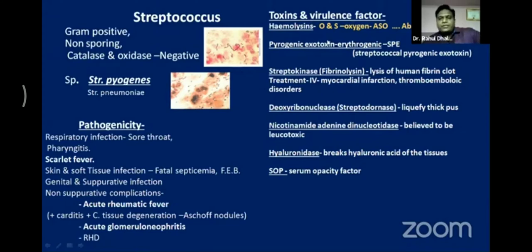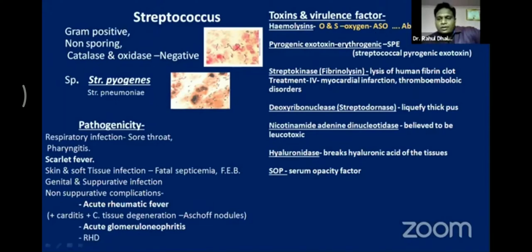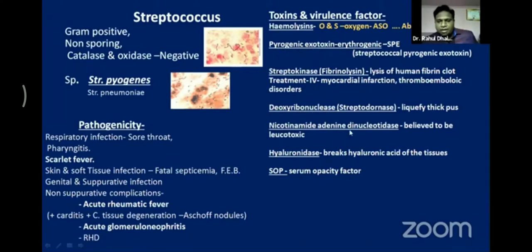Hemolysins produced by Streptococcus pyogenes are streptolysin O and streptolysin S — oxygen labile and oxygen stable respectively. Streptolysin O is very important: the immune system produces antibodies against it, detectable as anti-streptolysin O (ASO) antibody titer. The titer is 1:200; above this is significant infection. Other toxins include pyrogenic exotoxins, streptokinase, deoxyribonuclease, nicotinamide adenine dinucleotidase, hyaluronidase, and serum opacity factor.